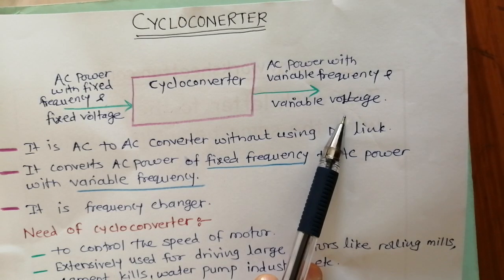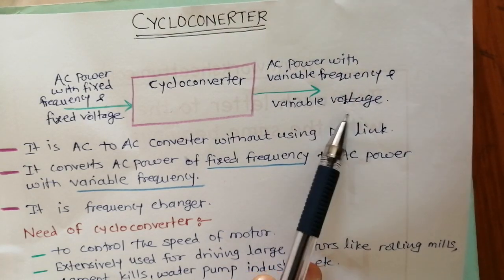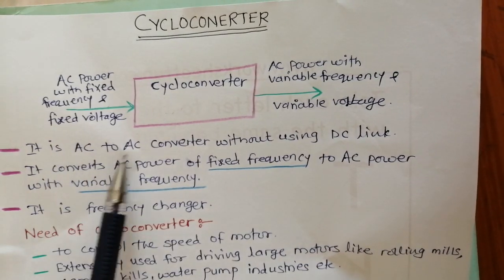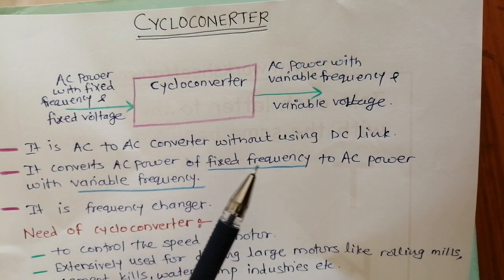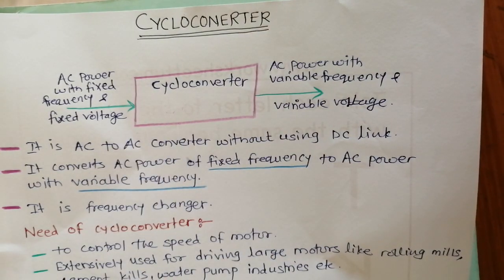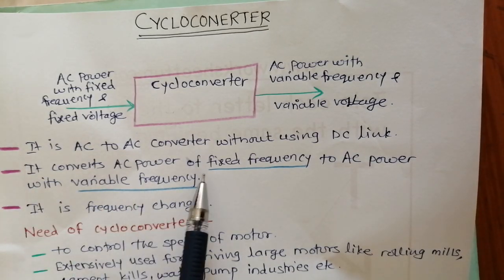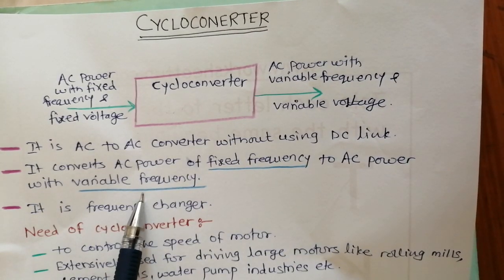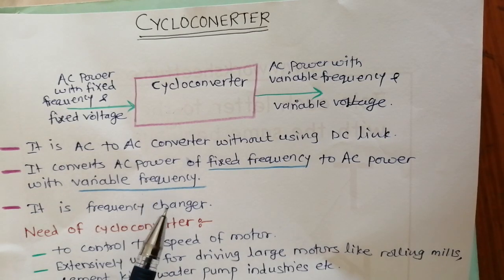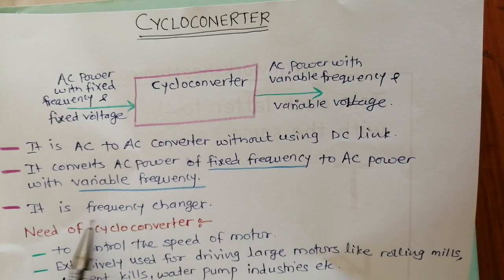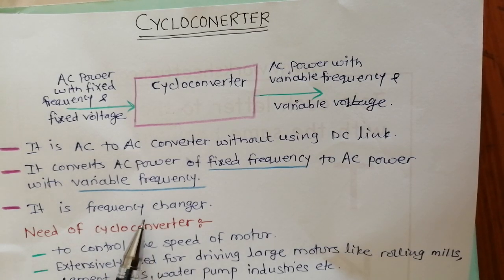The cycloconverter is an AC-to-AC converter without using any DC links — meaning during conversion from input to output, no DC links are involved. It converts AC power of fixed frequency to AC power with variable frequency, which is why it is known as a frequency changer.